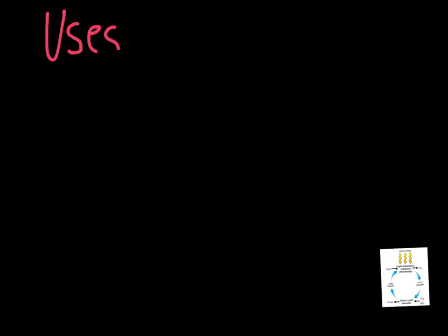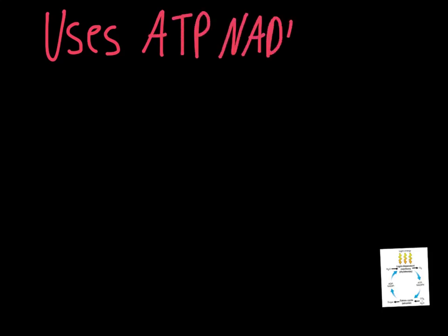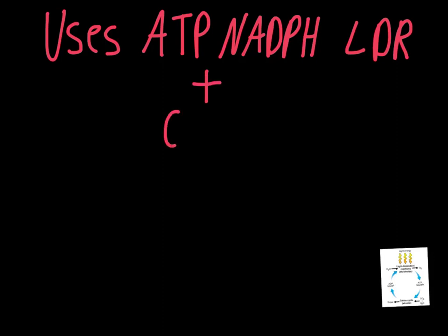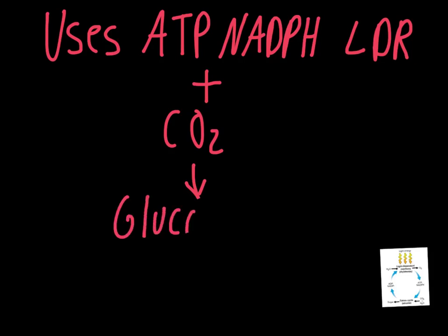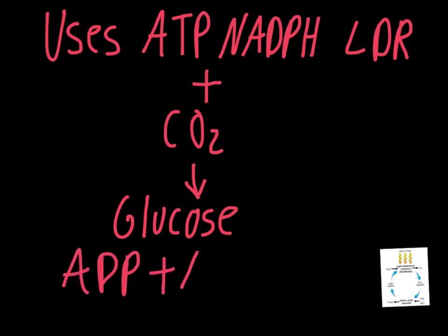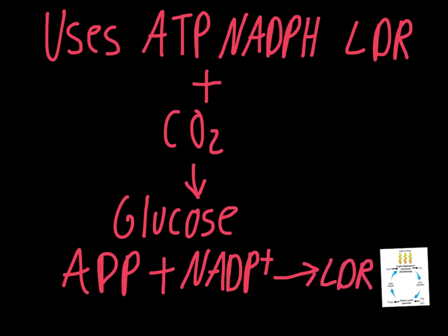To recap the Calvin cycle: first, it uses ATP and NADPH, which come from the light-dependent reactions (abbreviated as LDR). It's also taking in carbon dioxide from the atmosphere, and it's using those things to make glucose. What we're left with at the end is ADP and NADP+. Those things go back to the light-dependent reactions in order to be recharged.